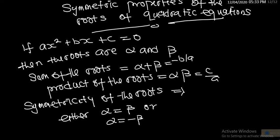By the symmetricity of the roots we mean that it is either alpha equal to beta or alpha equal to minus beta. So if you have 1/alpha, then the expression symmetric to it will be 1/beta — you interchange them. This is called manipulation of the roots of a quadratic equation.